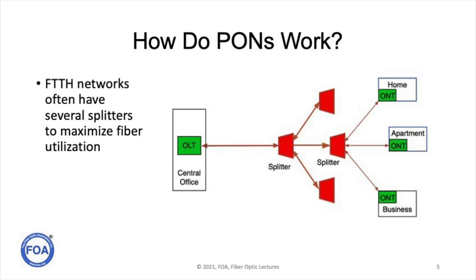We'll have one splitter going to a number of other splitters in different geographic areas. For a 32-times split, which is typical today, you might have a combination of 1x2, 1x4, 1x8, even 1x16 splitters, that total up to a split of 32 over the entire run of the network from the central office to the user.